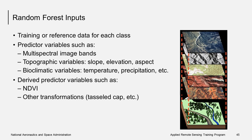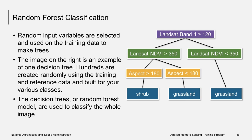Random forest is another approach to mapping land cover. This approach calculates land cover or percent tree cover by creating many different decision trees and applying each pixel in an image to each of the trees. Inputs include training or reference data from the ground or some other reference, and predictor variables including the image bands and other topographic and bioclimatic variables. Other predictor values can be derived such as NDVI or other image transformations like tassel cap. Hundreds of these trees are created randomly for the desired land cover classes to create a random forest model, which is then used to classify the whole image.